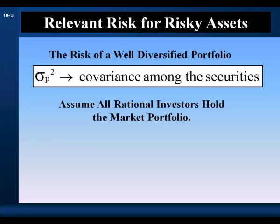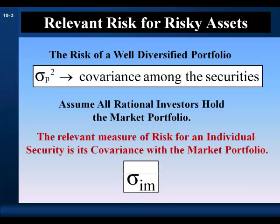Now assume all rational investors hold the market portfolio. An individual security brings its covariance with the market to the market portfolio. So if all investors hold the market portfolio, the relevant measure of risk for an individual security is its covariance with the market portfolio.